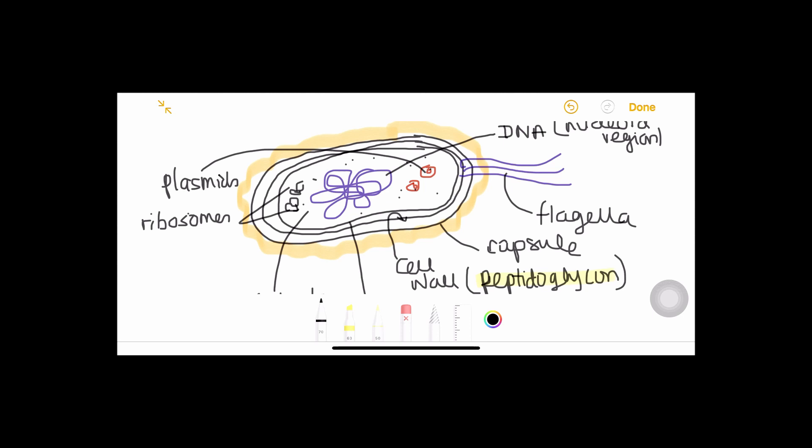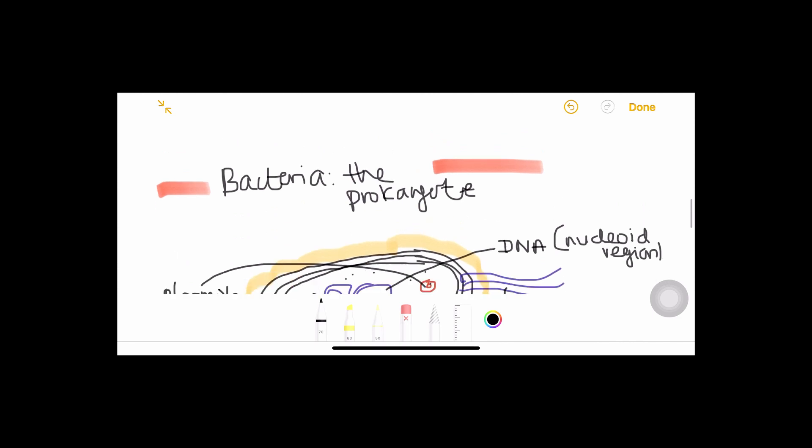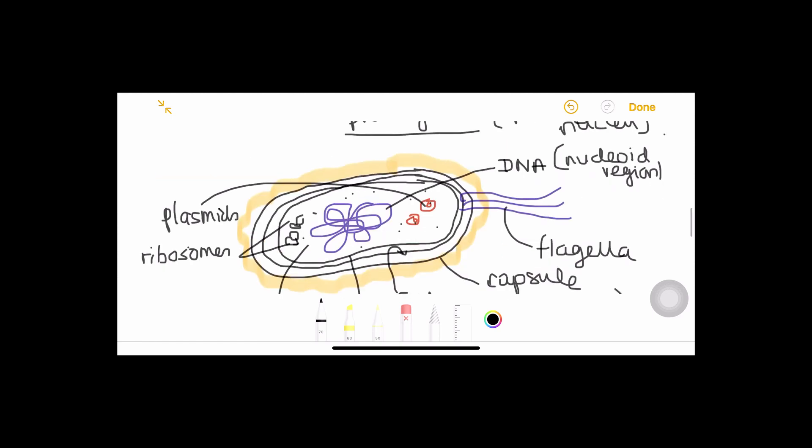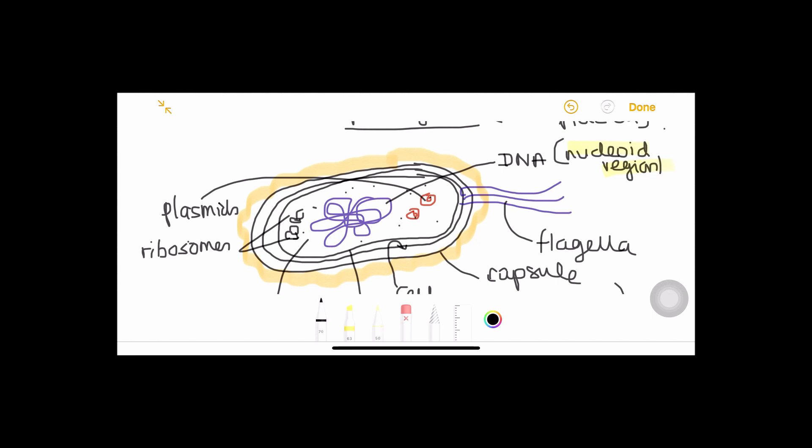They also have a flagella which helps them swim from one place to another. They have the genetic material in an open space. We know that they are called prokaryotes. The reason why they are called prokaryotes is that they have no organized nucleus, therefore their genetic material is just going to lie around in this area. We call it the nucleoid region.